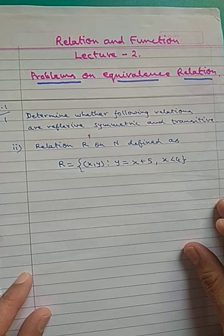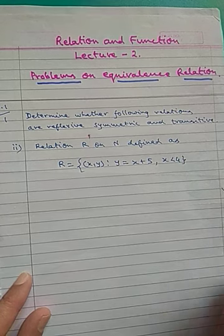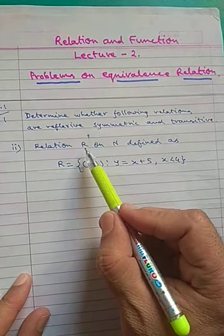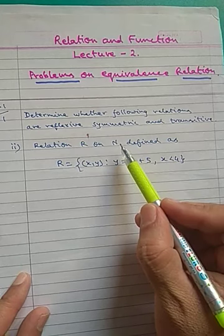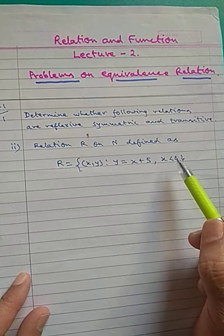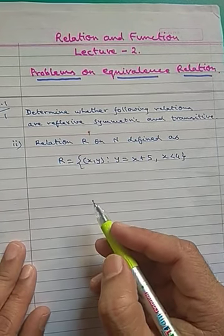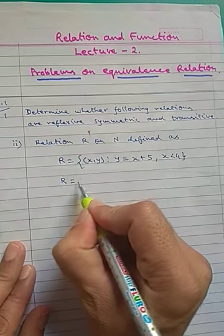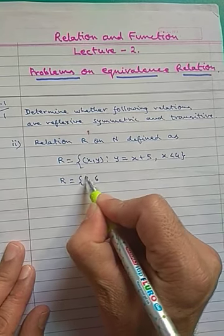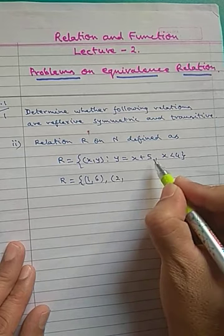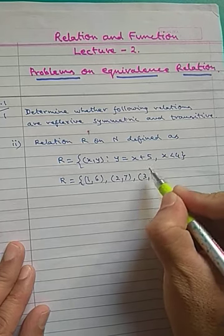Before writing the relation, first identify the domain. R is defined on ℕ but x is less than 4, so we take x as a natural number less than 4. The possible values of x are 1, 2, and 3. When x equals 1, y equals 6; when x equals 2, y equals 7; when x equals 3, y equals 8.